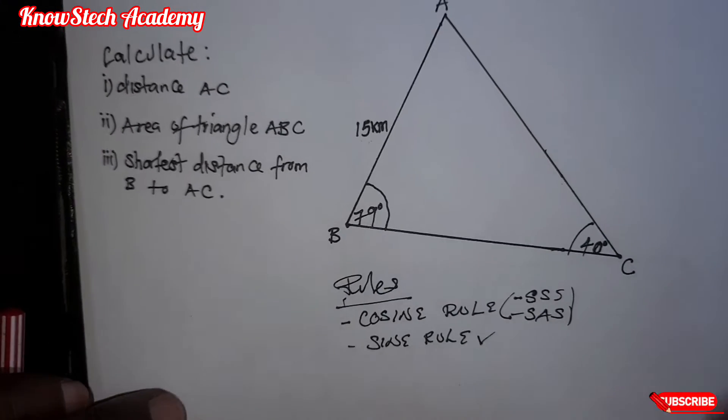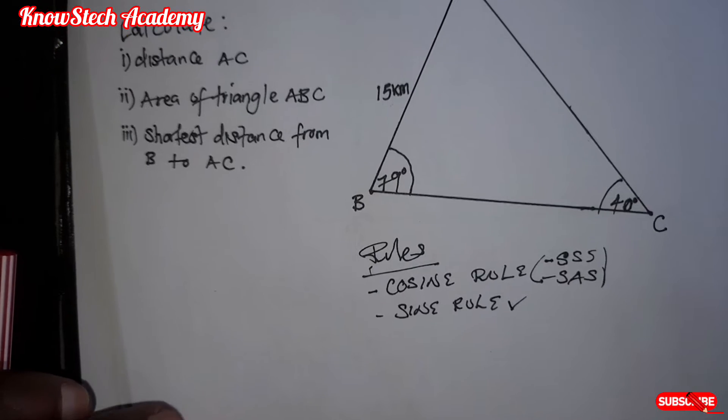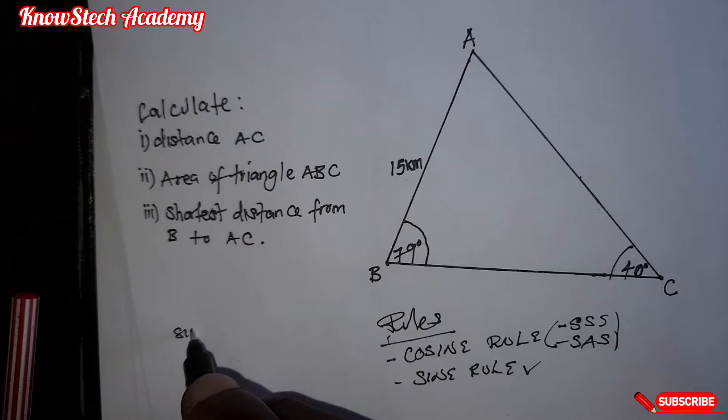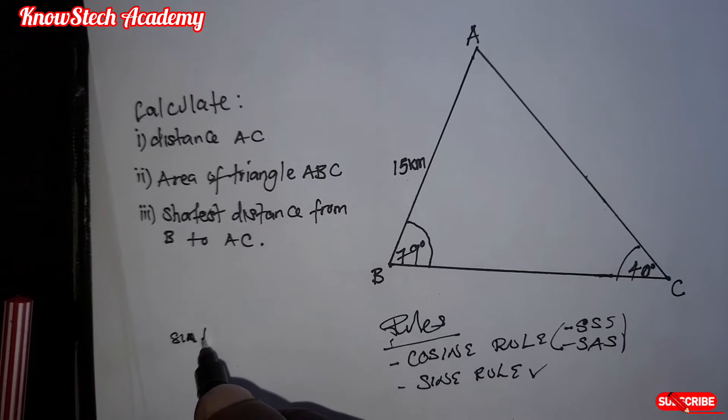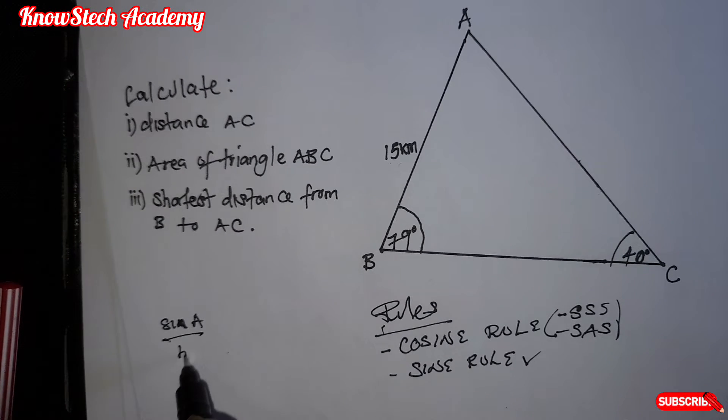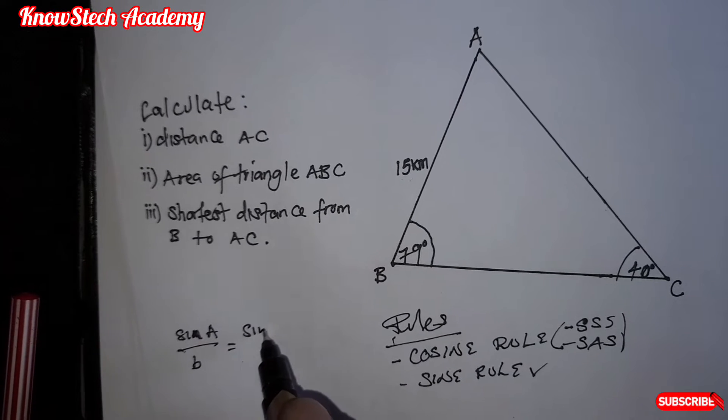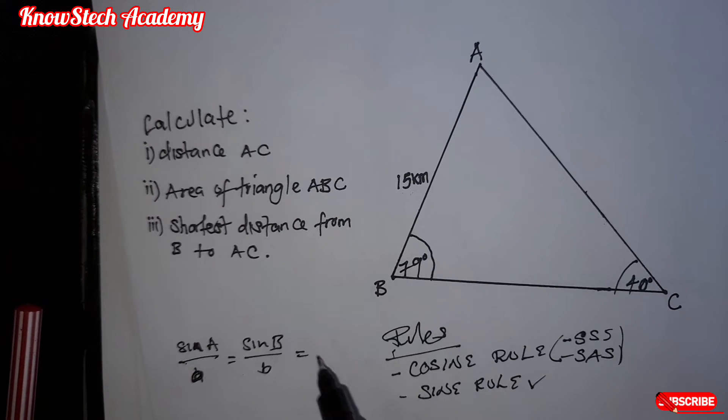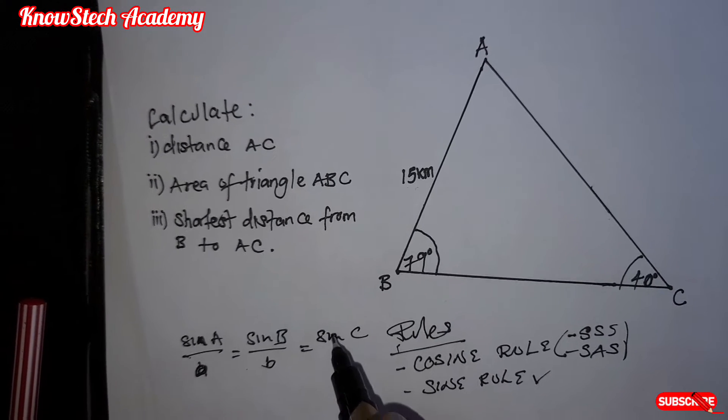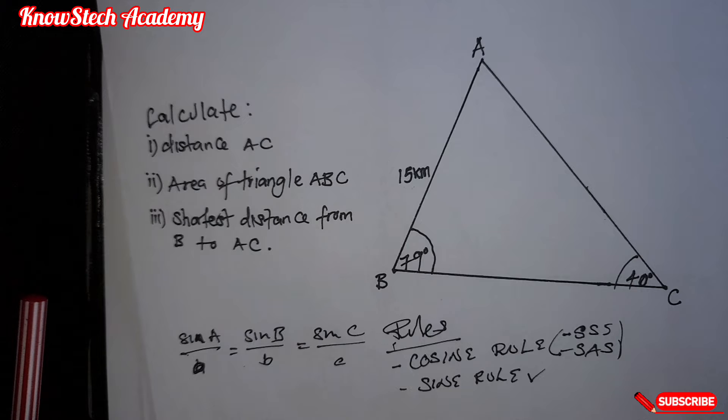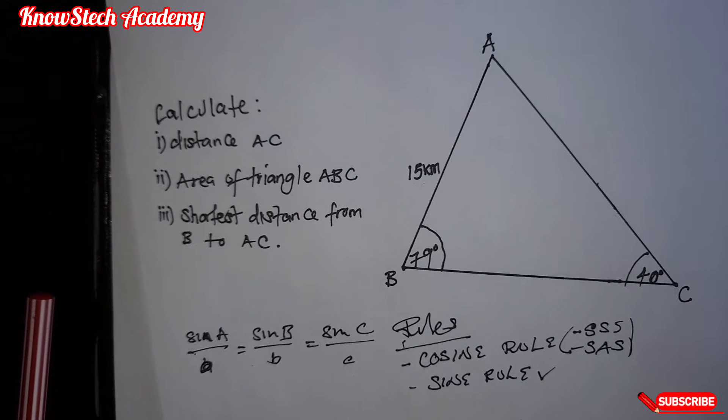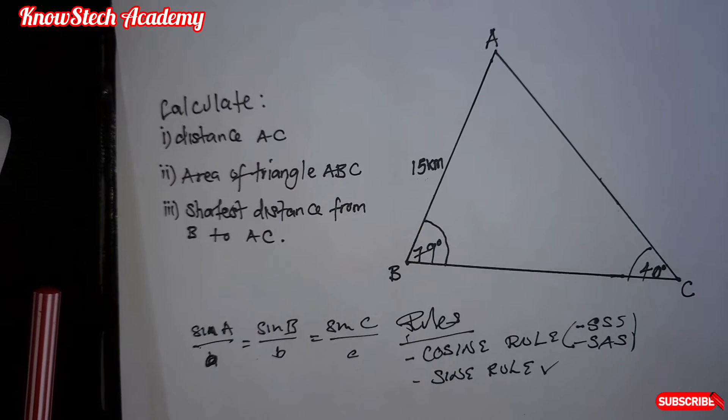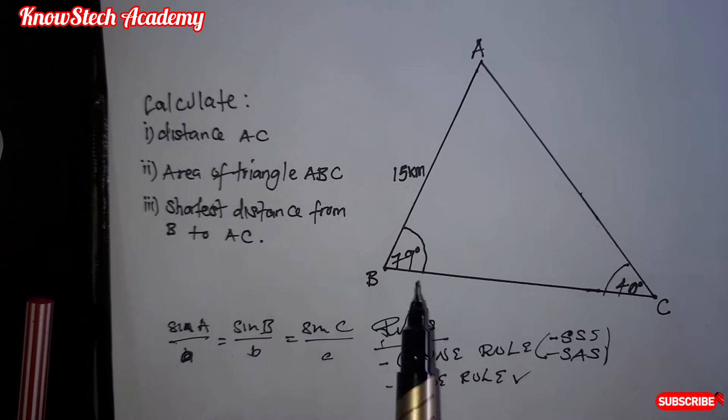Now how do you find angles or the sides using sine rule? We use this: sine angle A over side a, which is equal to sine B over side b. Then it's equal to sine C over c. Now, these are just ratios. But at a time, we only use two.